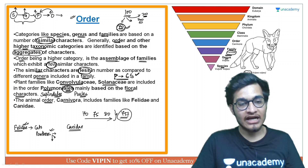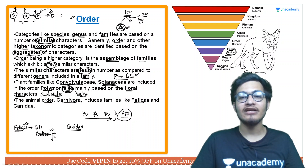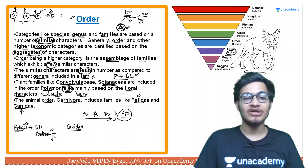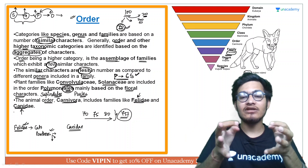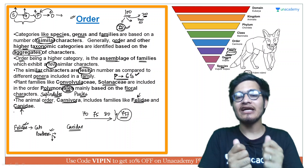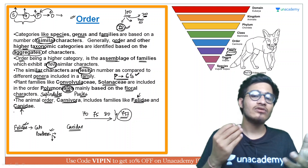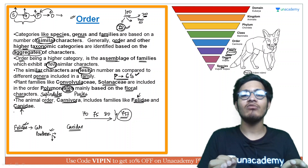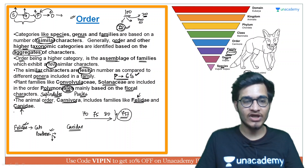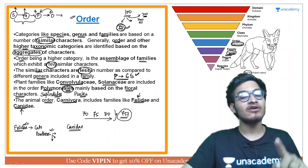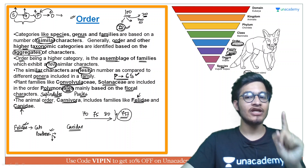For animals, the order Carnivora includes which families? It includes Felidae — the family of cat and tiger — and Canidae — the family of dog and red fox. Based on an aggregation of characters, similarities were observed between these two families and they were placed in the same order, which is Carnivora. So order Carnivora includes both Canidae and Felidae.